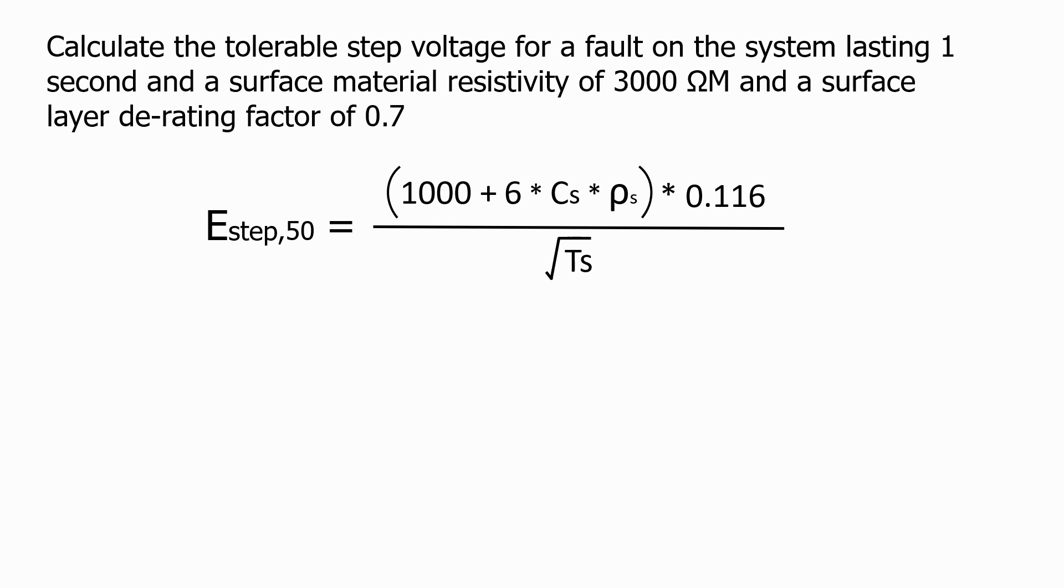Here is our previous equation to calculate the step voltage of someone weighing 50 kg, which is the worst case scenario. Putting the figures in from above, CS is the surface layer derating factor of 0.7, the surface material resistivity is 3000 ohms, and the fault will last for one second. This gives us a tolerable step voltage of 1577 volts.